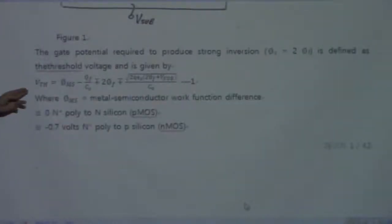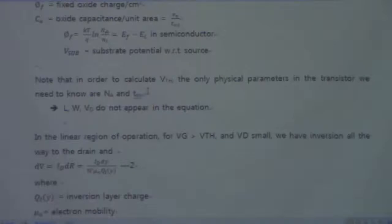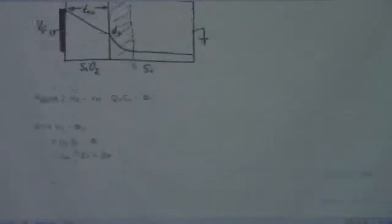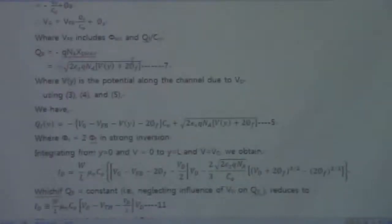So we have to do something about the classical equations. The threshold voltage equation doesn't contain any terms of length or width. Basically, what we are going to do is put some W and L into that equation to reflect the fact that as we change the geometry of the transistor, we are going to have a different threshold voltage. This is just a brief review of the threshold voltage determination from a prior class.